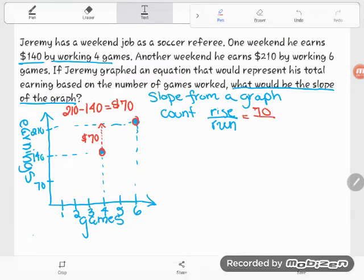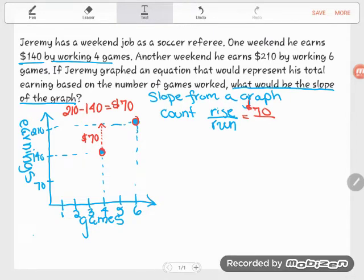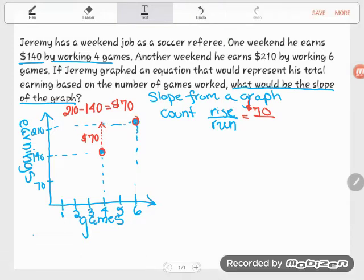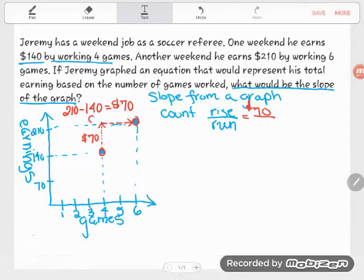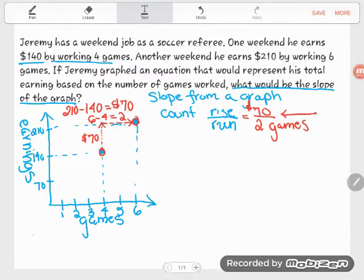So our rise here is $70 - that's what I'll put on top of my fraction. Now my run is how much I went over, the change in the number of games. So I increased $70 when I worked how many more games? At our first point he had worked 4 games, and then at our second point he had worked 6 games. That's a change of how many games? 6 minus 4, that's 2. He's worked 2 more games.